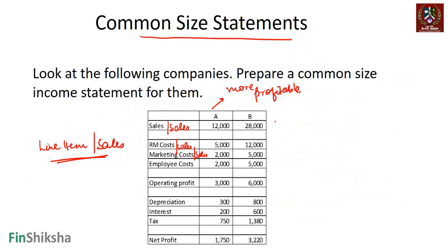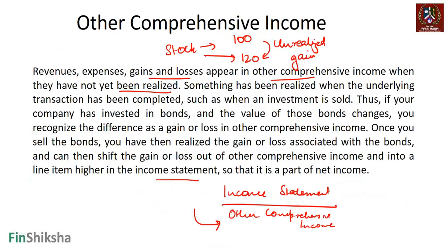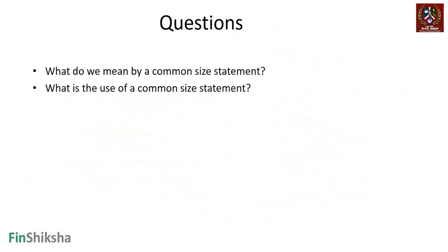To quickly reiterate: everything expressed as a percentage of sales is what we mean by common size statements. You can also have common size statements for balance sheets and cash flows, but we're focused on the income statement here. That brings us to the end of this section. A couple of quick questions: what do we mean by a common size statement, and what is the use of a common size statement?